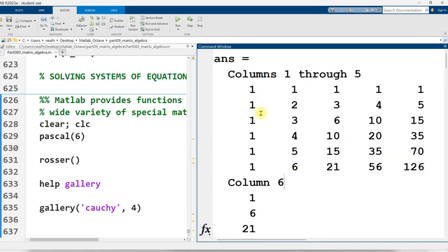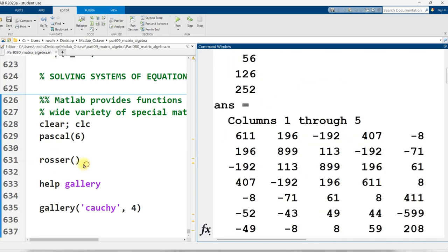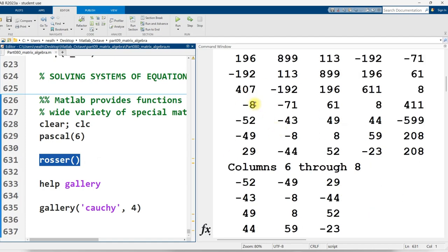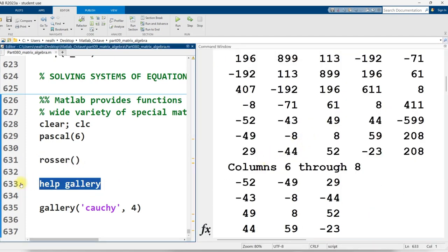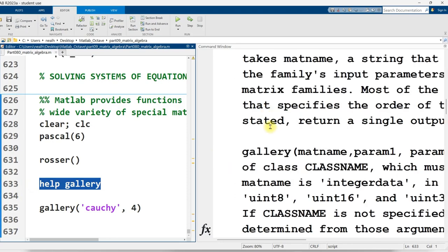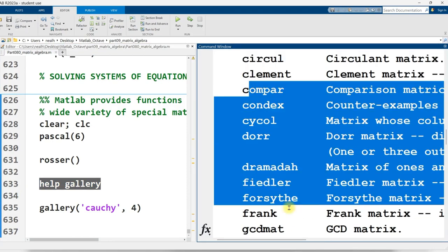I didn't make my screen wide enough, but we're going to deal with it. Rosser, that function generates a Rosser matrix. I don't even know what that is. Help gallery will show you the gallery of matrices that MATLAB can generate. They are many, many, many, many, many.